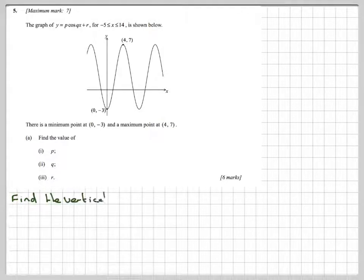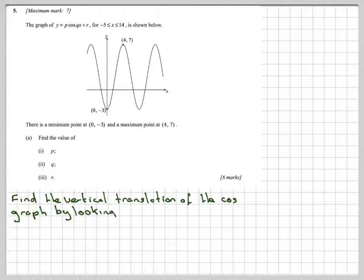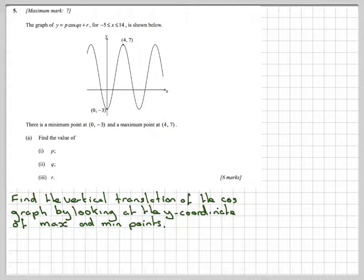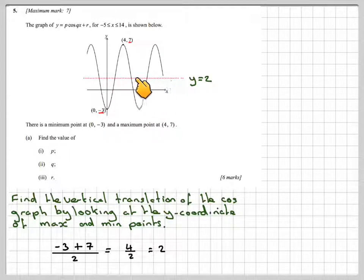To find r, we need to find the vertical translation of the cos graph by looking at the y coordinate of the max and min points. I'm trying to find where the axis of symmetry is on this graph. If I take the y coordinates, 7 and minus 3, add them together and divide by 2, I get 4 over 2, which is 2. If I draw the line y equals 2, we can see that is an axis of symmetry for this graph. That means the value of r is plus 2.